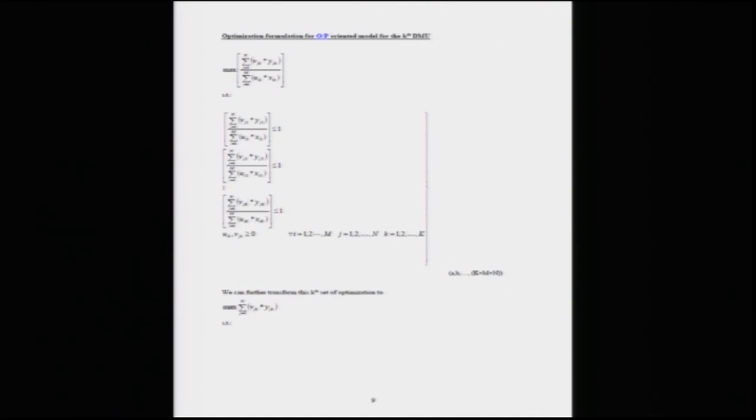Another approach is to consider the ratio of input to output and rank from lowest to highest; if ranked from highest to lowest using output-to-input ratio, we should get the same results. These are the two approaches we will follow. Consider an output-oriented model for the kth DMU, where small k ranges from 1, 2, 3, 4 till K. We are taking any DMU arbitrarily for consideration. In the output-oriented model, the emphasis is on the output, and I will discuss how it can be done.